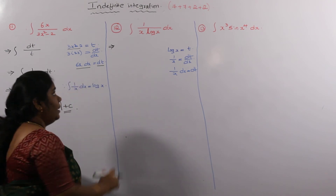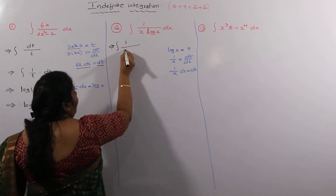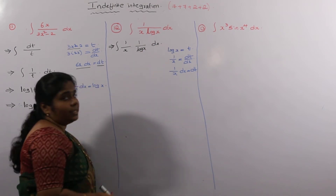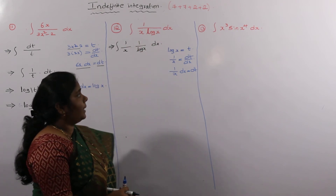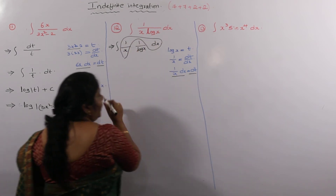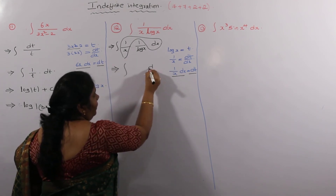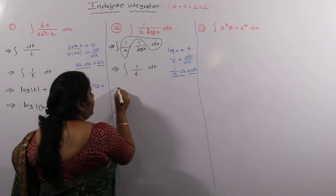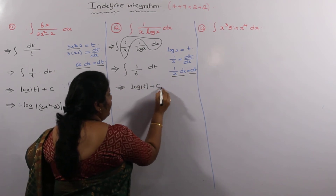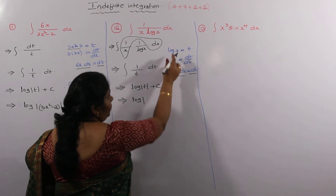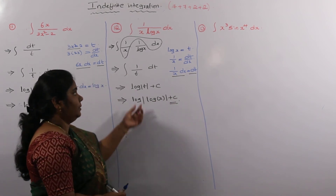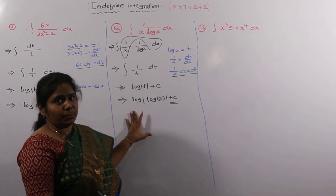This can be written as integral of (1/log x) · (1/x) dx. Since (1/x) dx equals dT and log x equals T, we get the integral of (1/T) dT, which equals log T + C. But T is equal to log x, so after substituting, the answer is log(log x) + C. Compulsory substitute the T value — that is most important.